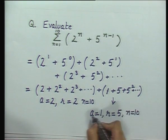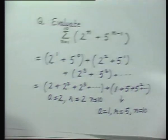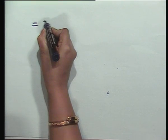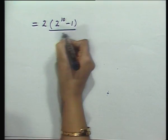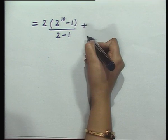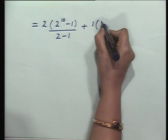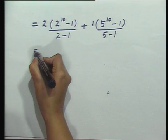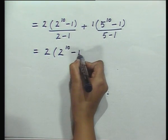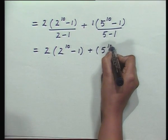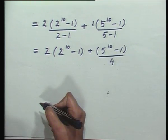We can easily sum up both the series. Using the formula a(r^n - 1)/(r - 1), the first GP gives 2(2^10 - 1)/(2 - 1). The second series starts with 1, so it is 1(5^10 - 1)/(5 - 1), which simplifies with denominator 4. You may simplify 2 and minus 1 and so on, but this is the value of the expression given in compact form using the sigma sign — one of the ways to reduce to a sum of terms of a GP.